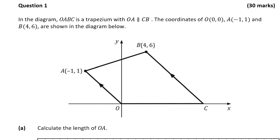Hello and welcome to the video, this is Matthew. We're going to look at question 1, which is a 30-mark question on the line. We're given a diagram OABC that's a trapezium and OA is parallel with CB. The coordinates of O, the origin (0,0), A (-1, 1), and B (4, 6) are shown in the diagram.